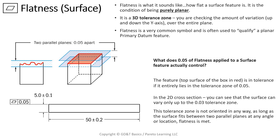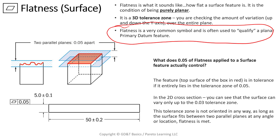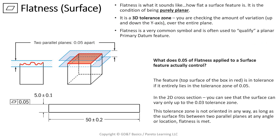We're just looking at a planar surface here. One thing I like to point out is that this is very common to use as a qualifier when the primary datum is a planar surface. It's not as common to see on other surfaces on the drawing because there are typically other geometric controls that are indirectly controlling flatness — such as parallelism, which is going to control flatness. But you may see it underneath parallelism as a refinement.